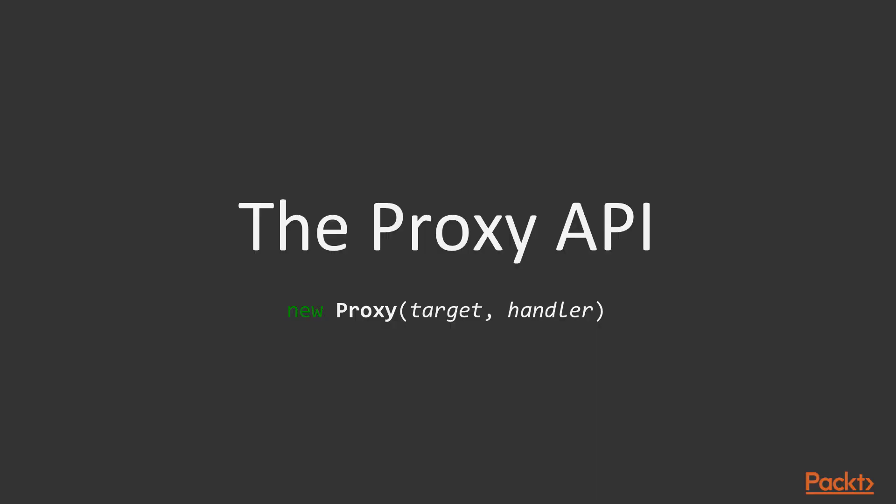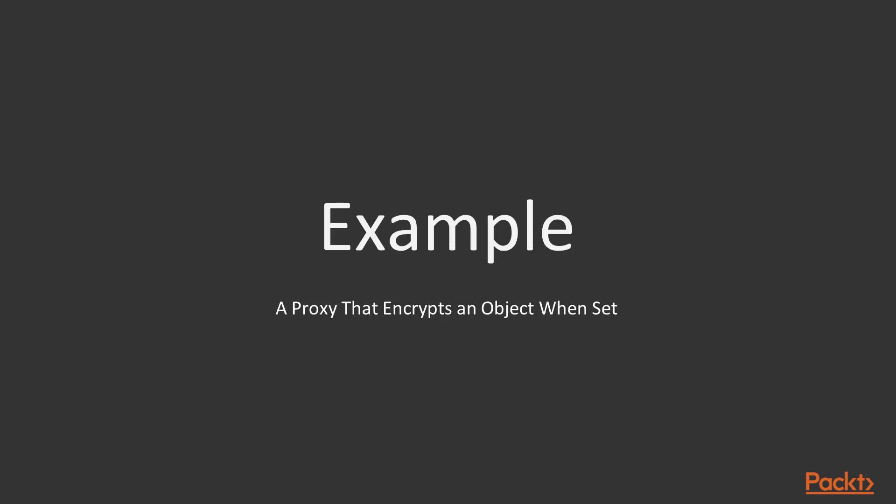To implement proxies in Node.js, we can use the Proxy API, which was introduced in ES2015 and has been available in Node.js ever since version 6. So let's look at two examples.